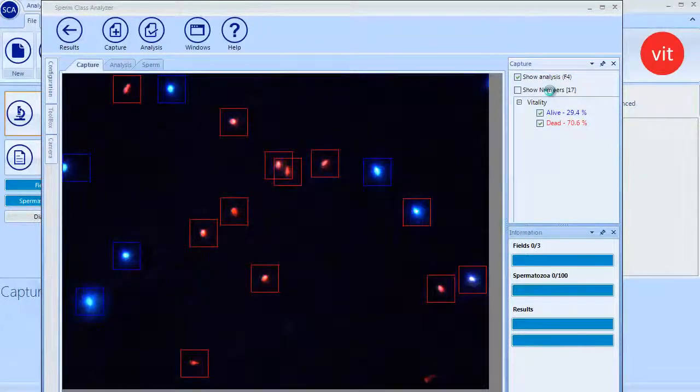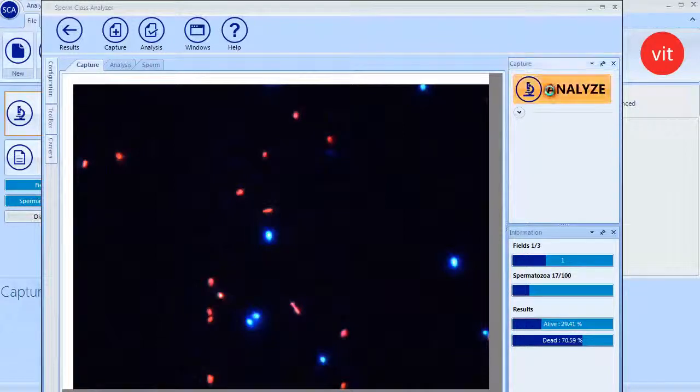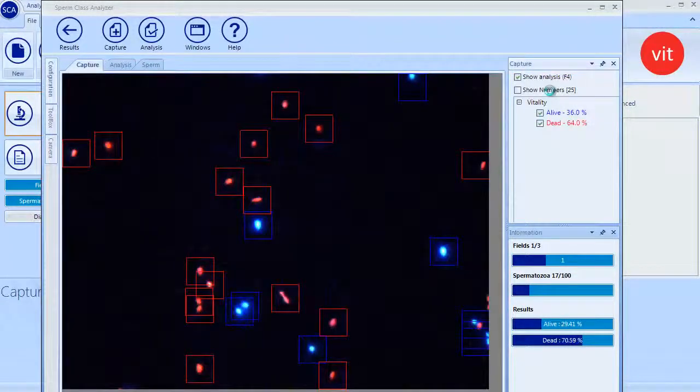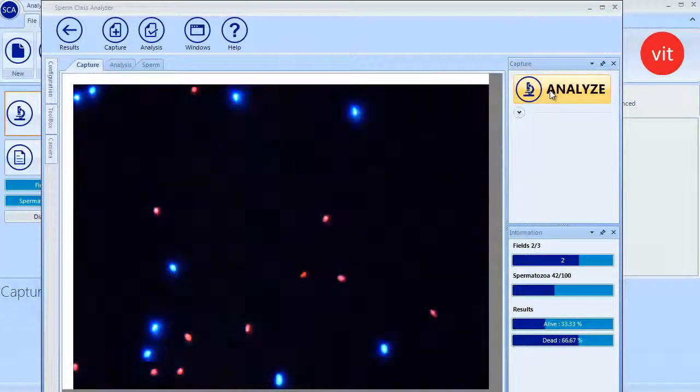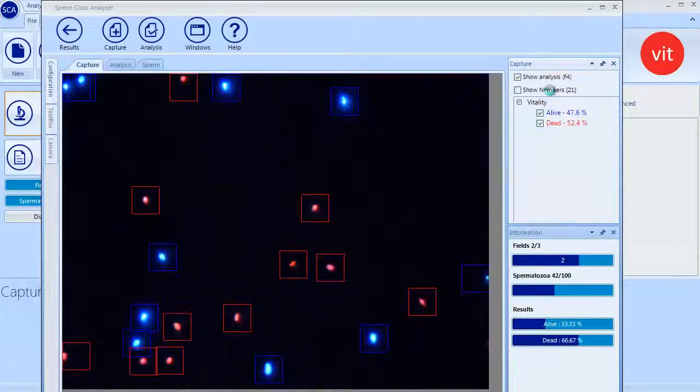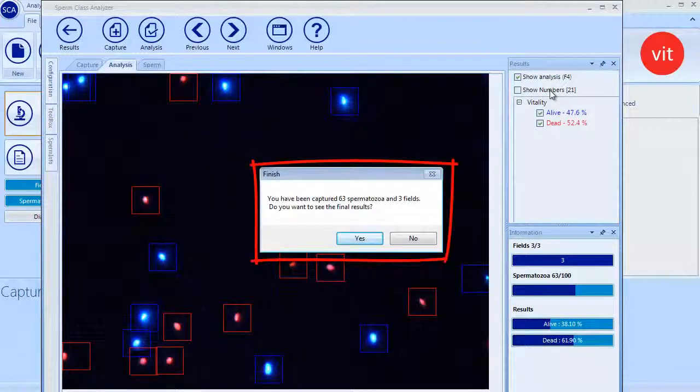Focus the field and analyze it by clicking again the Analyze button. Fields are captured and analyzed automatically. Once the desired number of spermatozoa is analyzed, the following message is displayed.